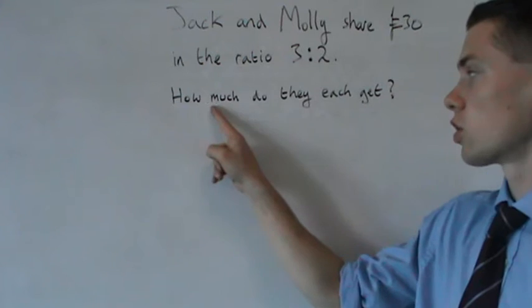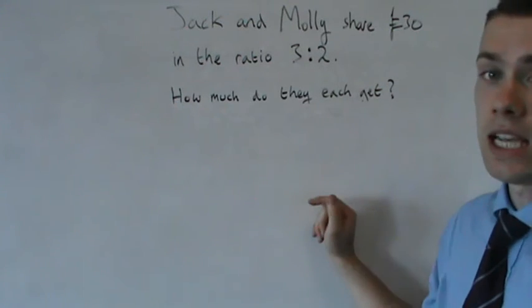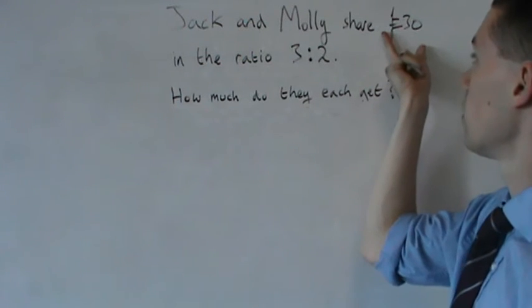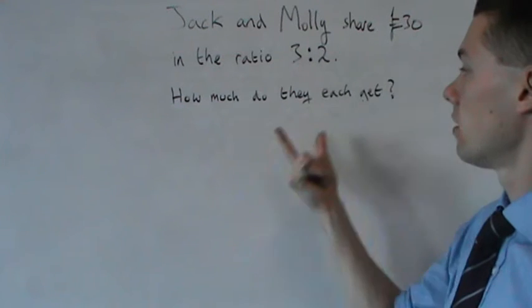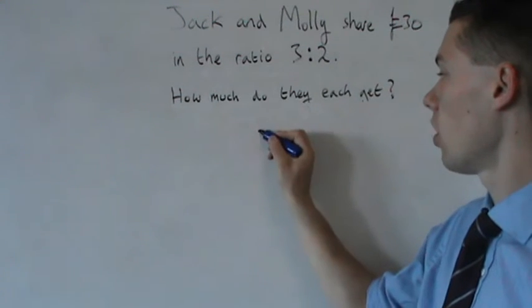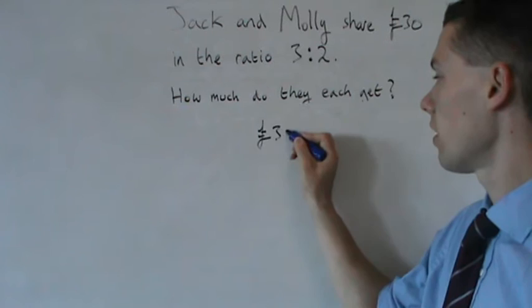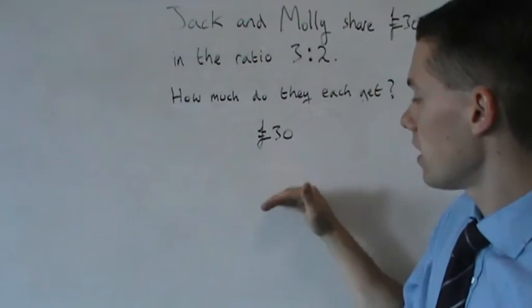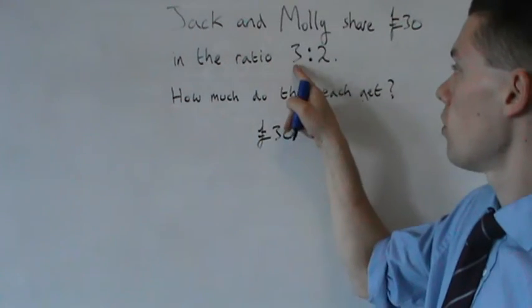So the way we answer this question of how much do they each get is we start off by writing down the total amount they share at the top. So £30 at the top, that's what they're sharing, and I'm leaving a bit of space right down below 3 to 2.